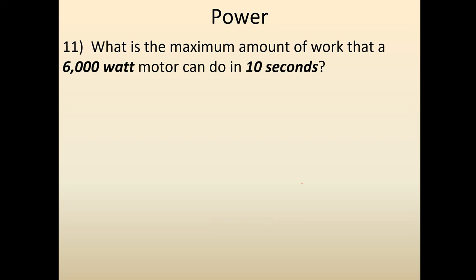Here's the first question — pause the video and work it yourself. To find the work, we use the power equation. We're given the power and the time, so we plug them into the equation and we get 60,000 joules.